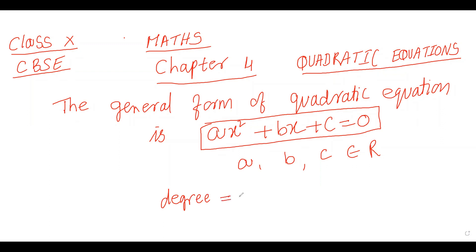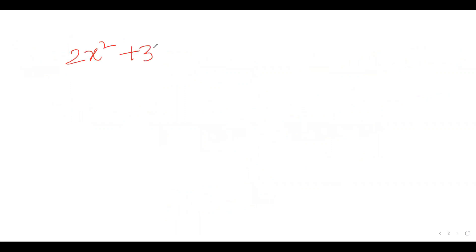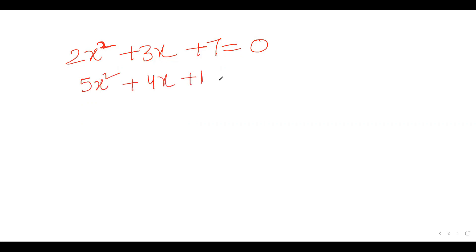The degree of a quadratic equation is equal to 2. Some examples of quadratic equations in x: 2x² + 3x + 7 = 0, 5x² + 4x + 1 = 0, and 2x² − 3x − 5 = 0. All of these are quadratic equations.